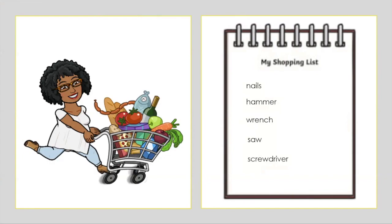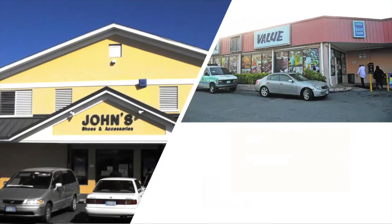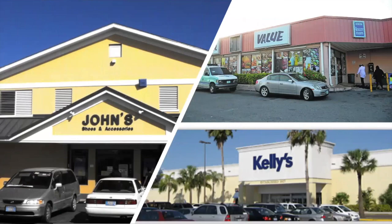Now, let's make an inference of which store I can go to to purchase or buy these items on my shopping list. Remember, we have to use the clues that are in the words to help us, as well as what we already know in our head. Here we have a picture of John's Shoe Store, Super Value, and Kelly's Store — these are all stores in the Bahamas. I want you to think of the clues on my list, as well as what you already know, to tell me which one of these stores I have to go to. I'll give you a few seconds.